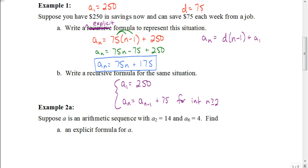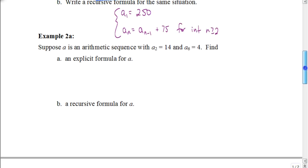That example is 100% review from advanced algebra. Now what happens if we have a problem like this? Suppose a is an arithmetic sequence with a-sub-2 equals 14 and a-sub-6 equals 4 — in other words, the second term is 14 and the sixth term is 4. I need to know the first term and the constant difference to find my explicit formula, but I don't seem to have enough information since neither is given directly.